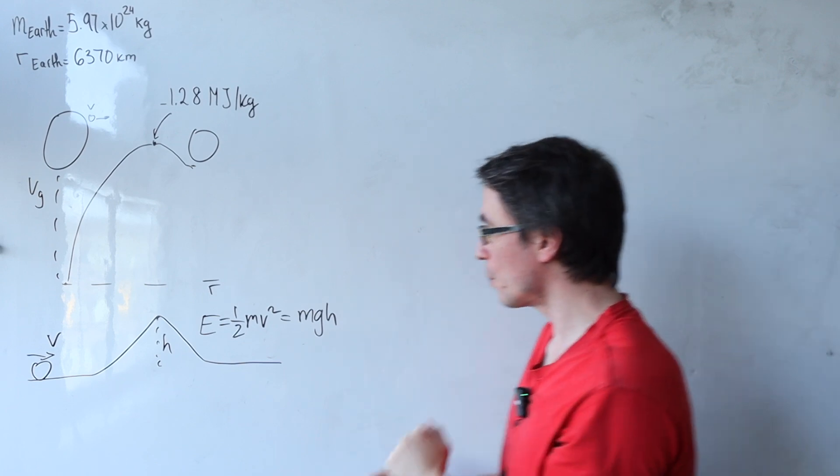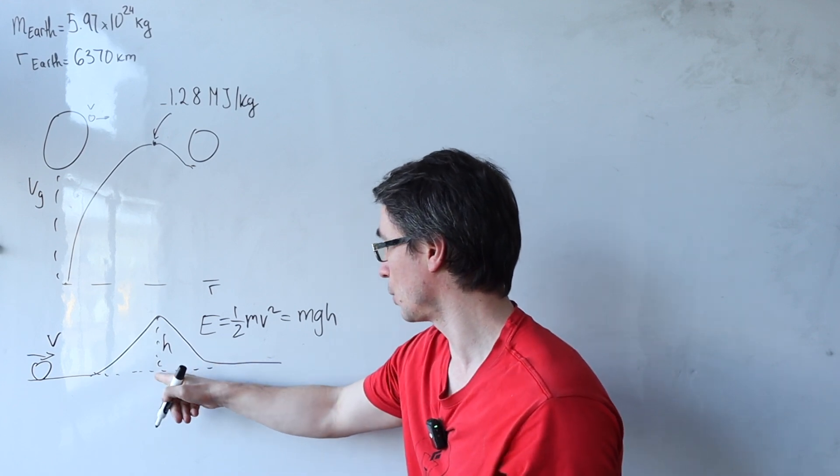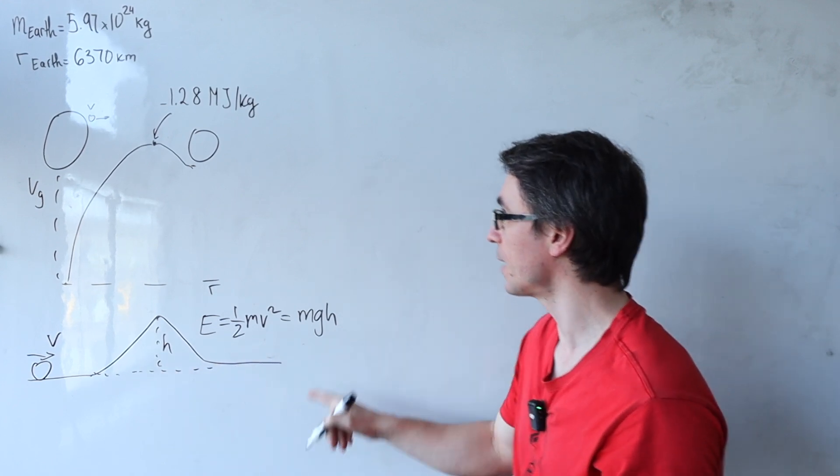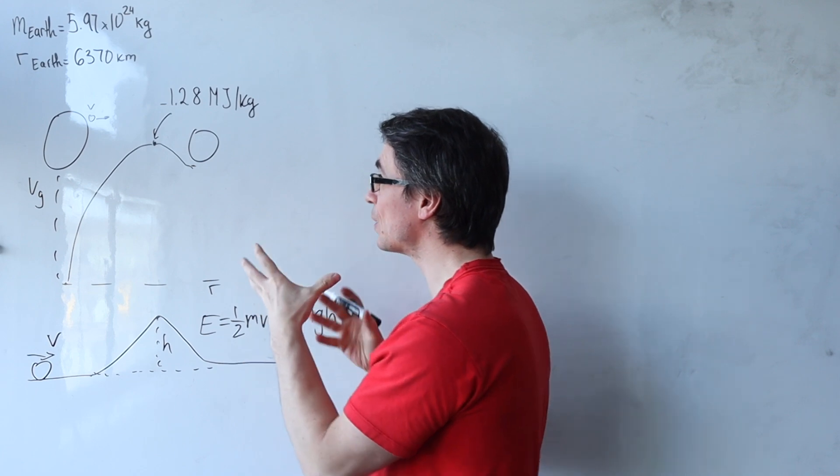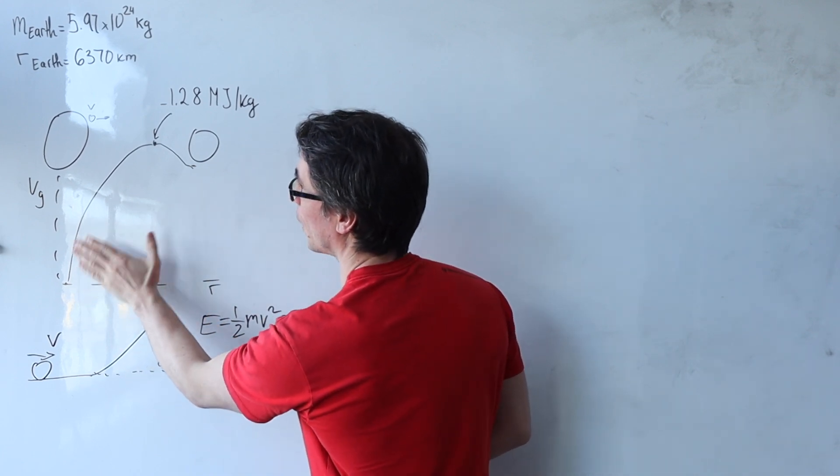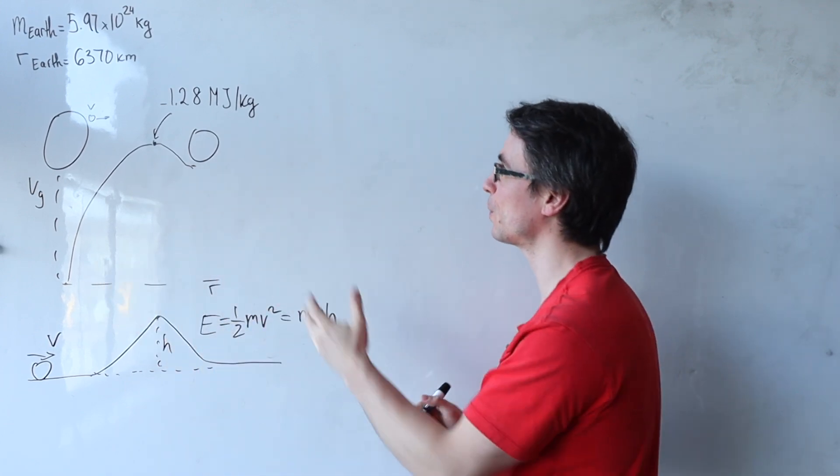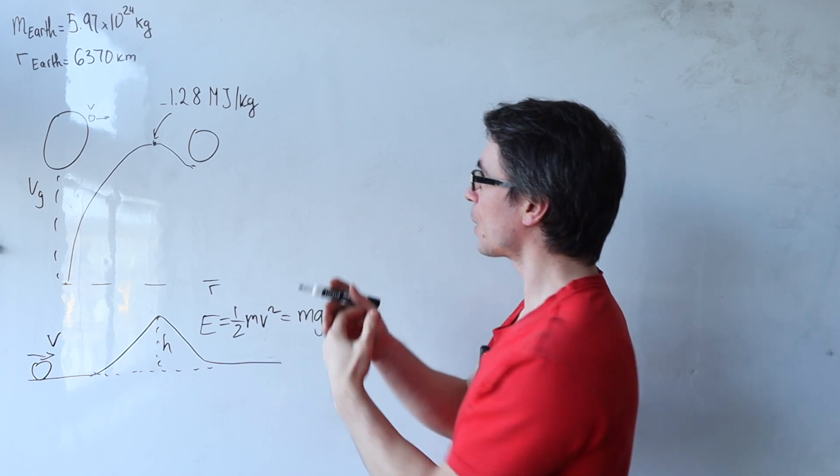There's one difference though. So we normally take the zero of the gravitational potential energy to be here in this case, but the gravitational potential is not zero at our starting point for our Earth-Moon problem. It's going to be some pretty negative value closer to the surface of the Earth. So tell you what,